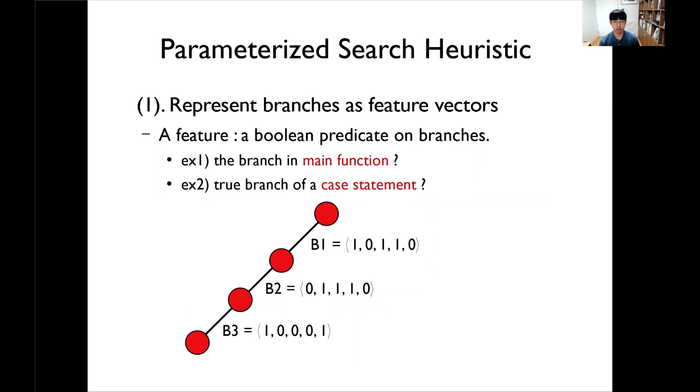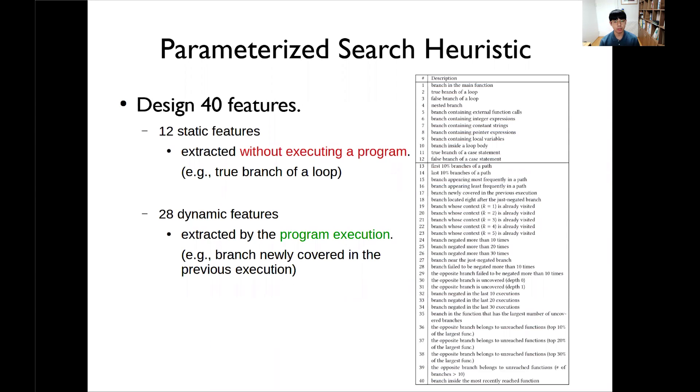To score the branches, first, we represent each branch as feature vectors. In our work, feature is a Boolean predicate on branches. For example, one of the features checks whether the branch is in the main function or whether it is a true branch of an if-statement or not. Suppose that branch 1, b1, is in the main function but it is not a true branch of an if-statement, so branch 1 will be marked as 1 and 0.